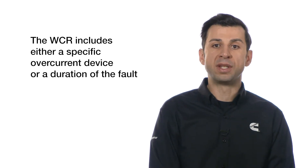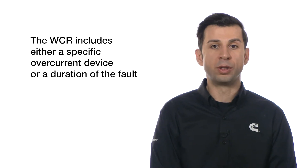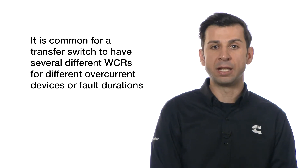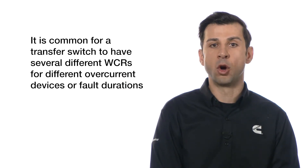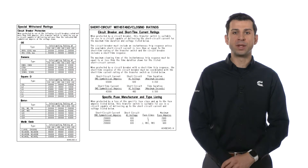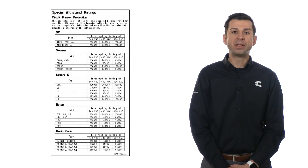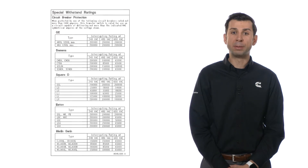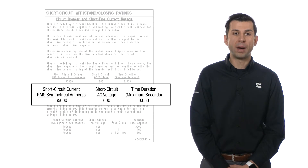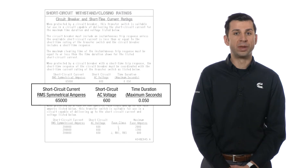The WCR includes either a specific over-current device or a duration of the fault, and it is common for a transfer switch to have several different WCRs for different over-current devices or fault durations. UL1008 requires that all WCRs, their associated durations, and/or over-current protective devices — breakers or fuses — be listed on the product. A proper installation requires either that the transfer switch be protected by an over-current device listed on the ATS label, or by a device that clears the fault in less time than the duration associated with the switch's WCR.